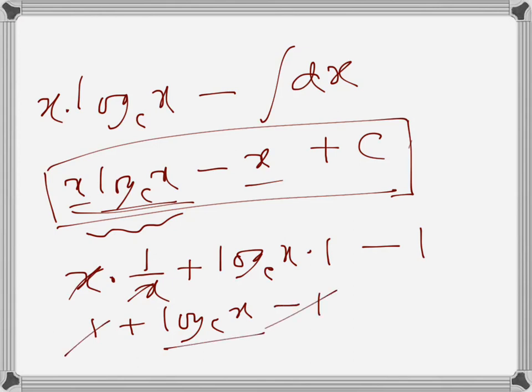So this is the antiderivative of log_e x with the integration constant, and we have used integration by parts to find it. That's what we have to do when finding the antiderivative of log_e x.